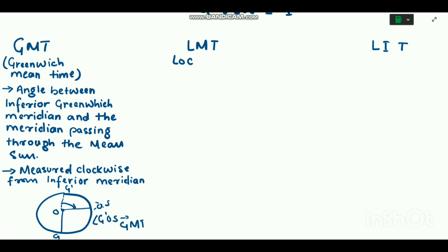So now let's discuss what is LMT. LMT is local mean time. The angle between the inferior observer's meridian and the meridian passing through the mean sun, measured clockwise from the inferior observer's meridian, is called LMT, that is local mean time.